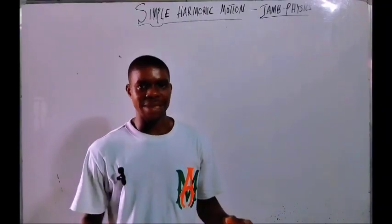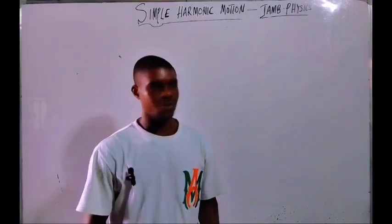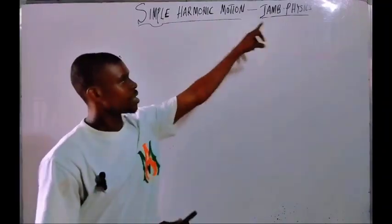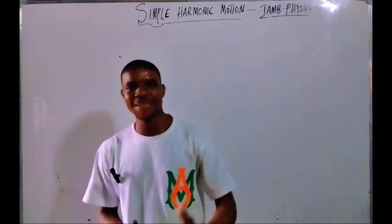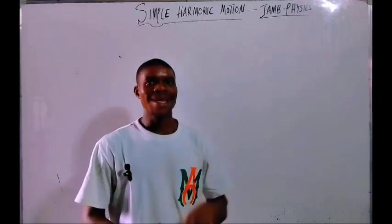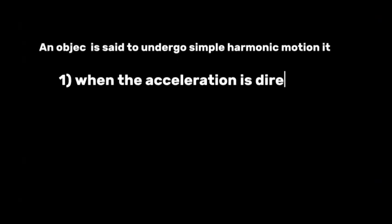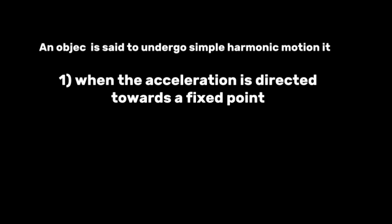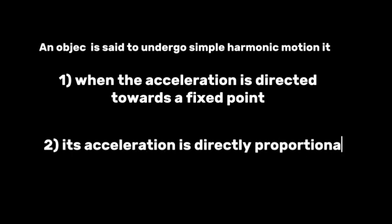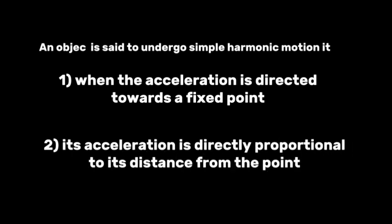About simple harmonic motion. What is simple harmonic motion? An object is said to undergo simple harmonic motion when: number one, the acceleration of the object is directed towards a fixed point; and number two, the acceleration of the object is proportional to the distance from the equilibrium position.